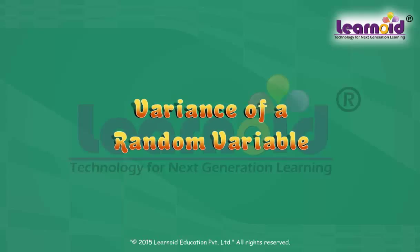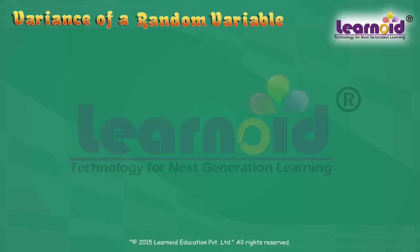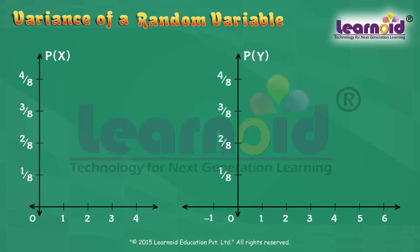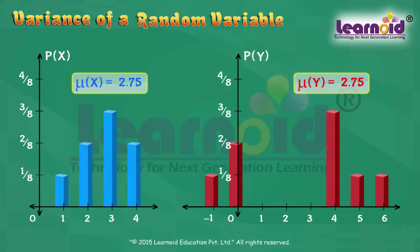Variance of a Random Variable. The mean value of a random variable only gives us the middle value or central tendency. It does not give information about the variability in the values of a random variable. Two variables may have the same mean but different spread of values. X and Y both have the same mean of 2.75, but their spread is different. Variance is a measure of the spread or scatter in data.